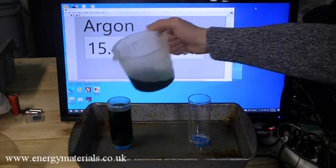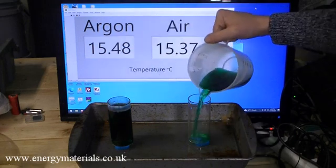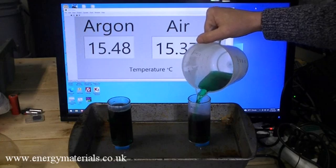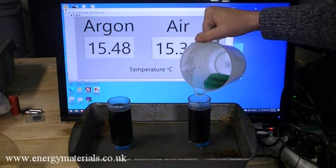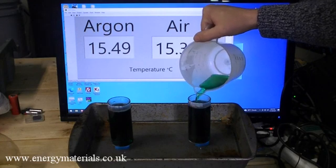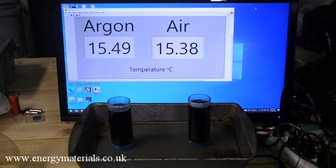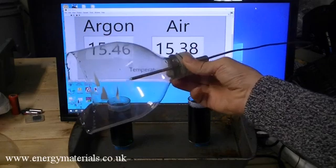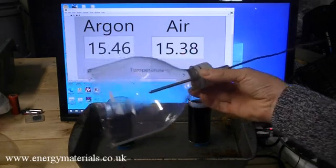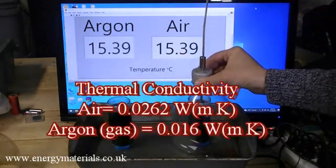The setup has two identical glass containers that are supported above a trough of water. The water is there to provide a gas seal with the surrounding containers that hold the test gas. The liquid used is warm water containing a food dye for visibility, poured into both containers to the same level.